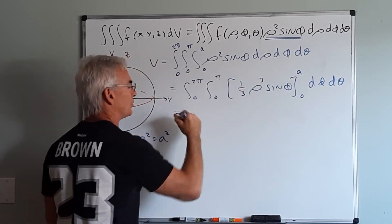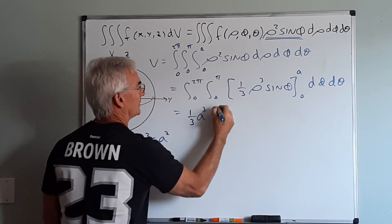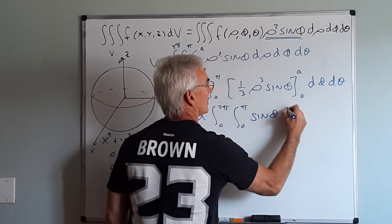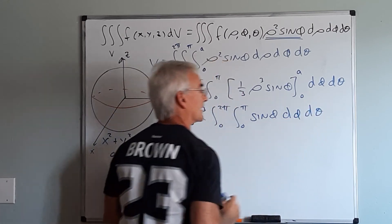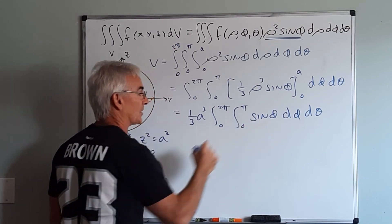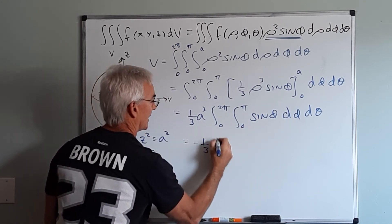I'll just go ahead and pull that constant on the outside, it'll make it a little bit easier to read. That's a d phi and a d theta, again making sure that those actually look different. Now the antiderivative of sine, of course, is negative cosine,